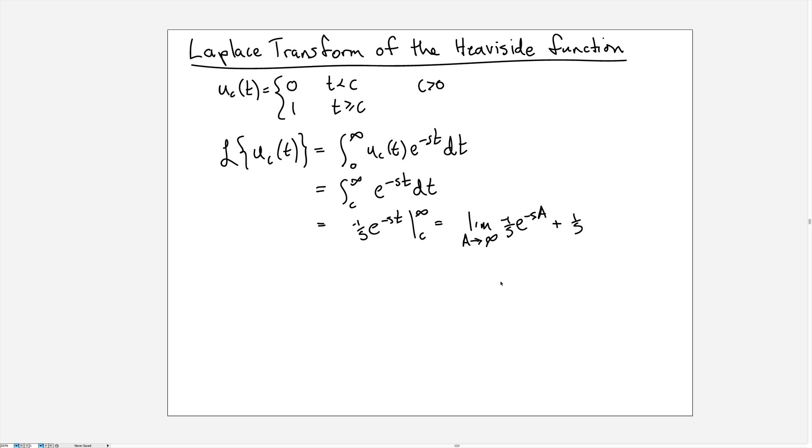That turns into a plus 1 over s e to the minus s times c. And now this limit will be finite, and in fact it'll be 0 as long as s is positive, because then the exponent is an increasingly negative number.